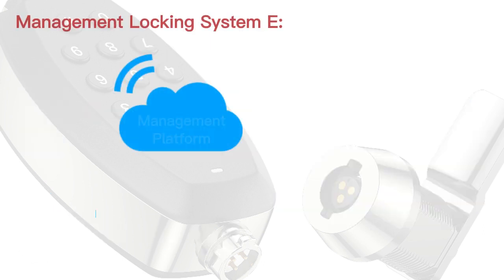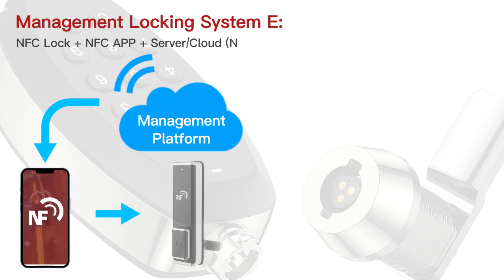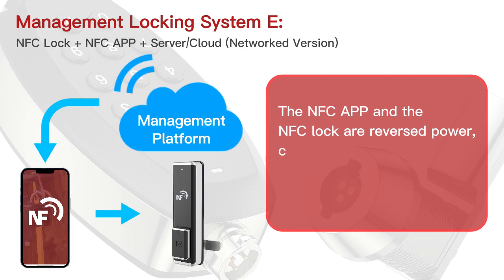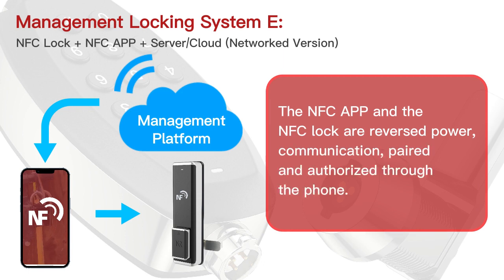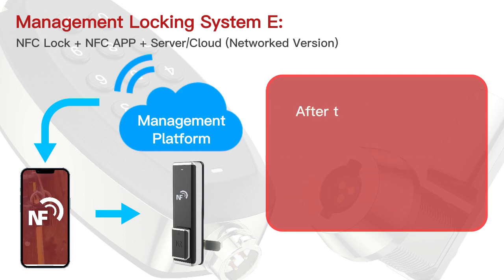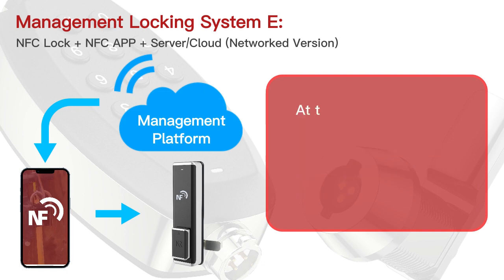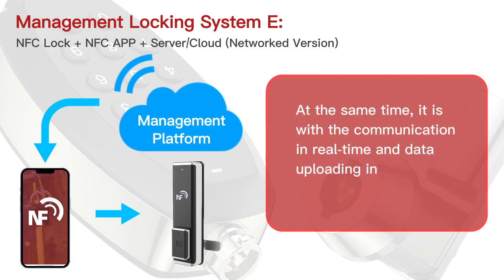Management locking system E: NFC lock plus NFC app plus server cloud, networked version. The NFC app and the NFC lock use reverse-power communication, paired and authorized through the phone. After pairing authorization, the user uses the NFC app to open and close the lock, with real-time communication and synchronized data uploading.